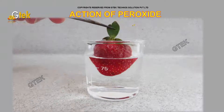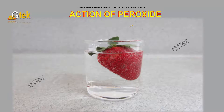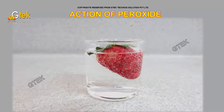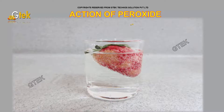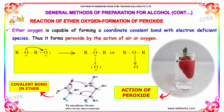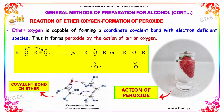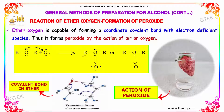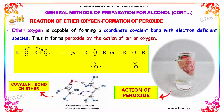This is the action of peroxide. Ether oxygen is capable of forming a coordinate covalent bond with electron-deficient species. Thus, it forms peroxide by the action of air or oxygen. This is the covalent bond present in the ether molecule and this is the action of peroxide as we have seen previously.